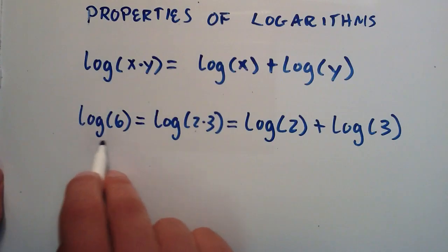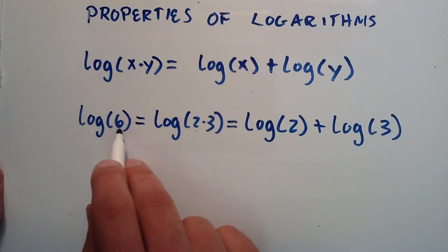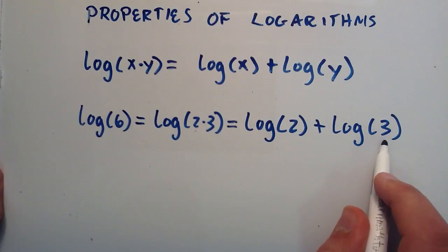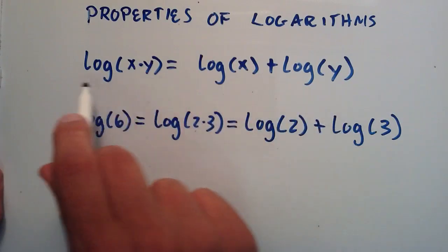So we were able to rewrite the logarithm of 6 as the logarithm of 2 plus the logarithm of 3 by using this property right here.